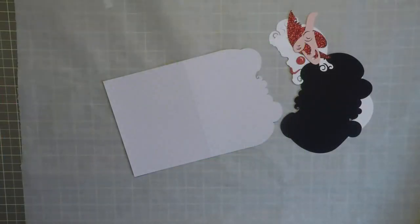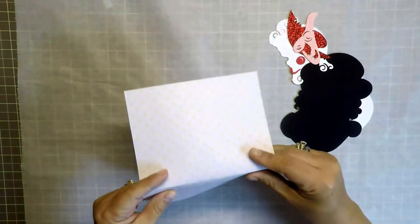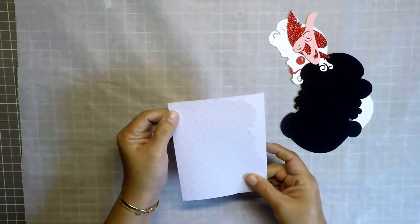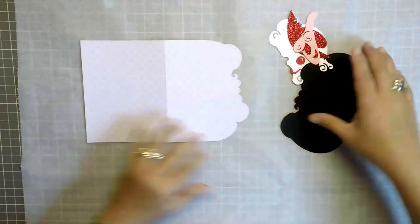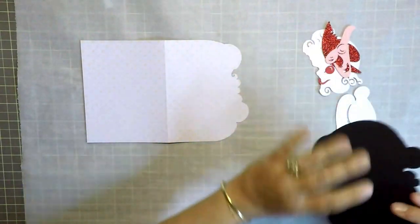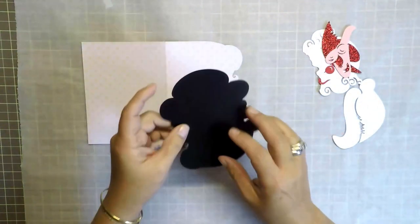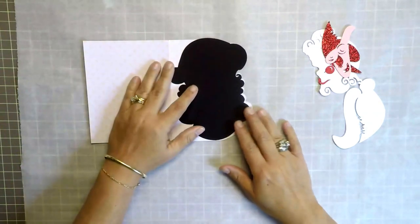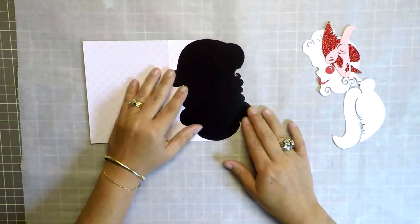It looks like all my pieces are cut now. What I'm going to do is fold the card base on the score line. What I like to do is put the pieces together, especially when there are as many as there are on this particular card. I like to place them on the card and kind of dry assemble them before I end up adhering any of the pieces down.